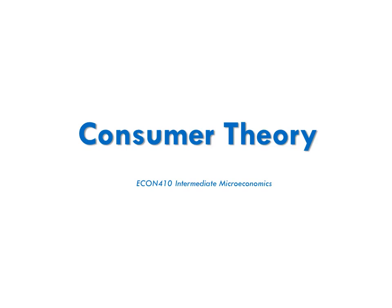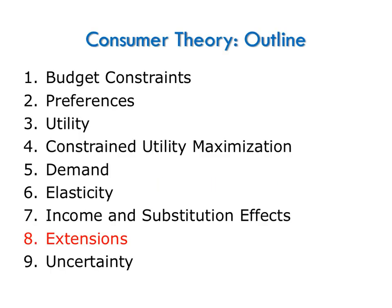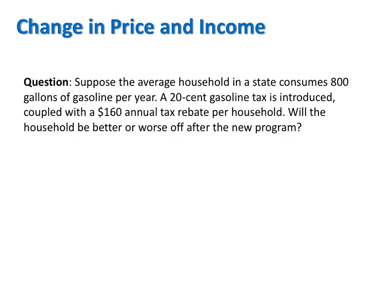This video is part of Consumer Theory. In it, I'll show you how to use our Consumer Theory model to consider simultaneous changes in price and income. Up until now, we've only considered what happens to a consumer's utility-maximizing bundle when there's a change in price or a change in income. But what if both price and income change at the same time?